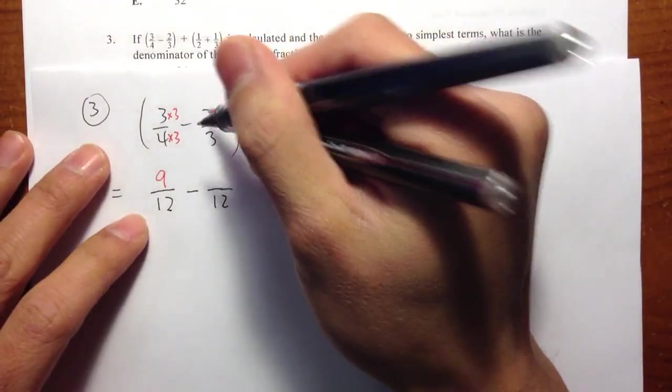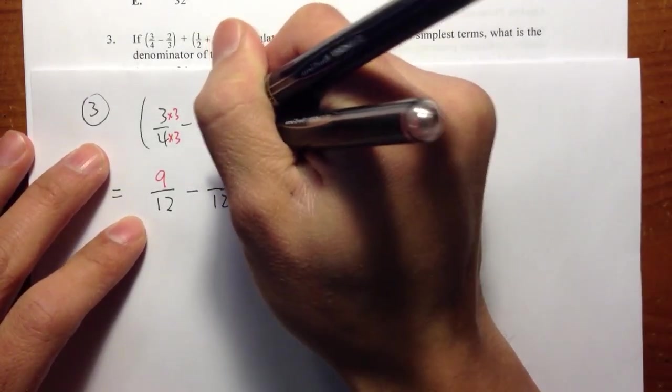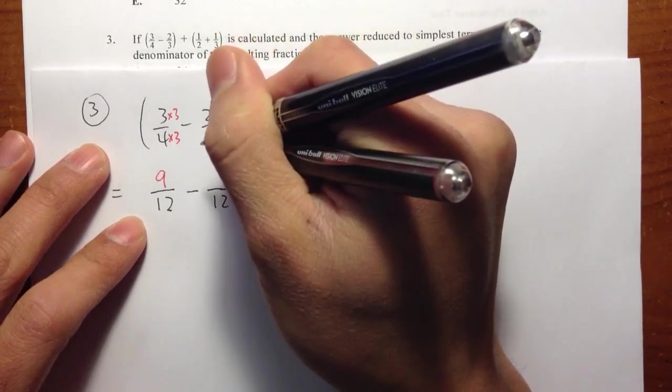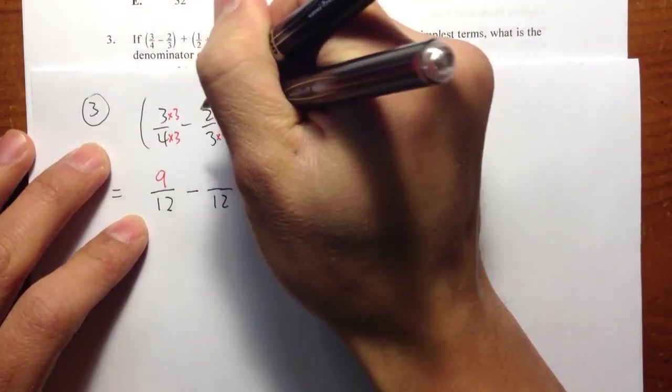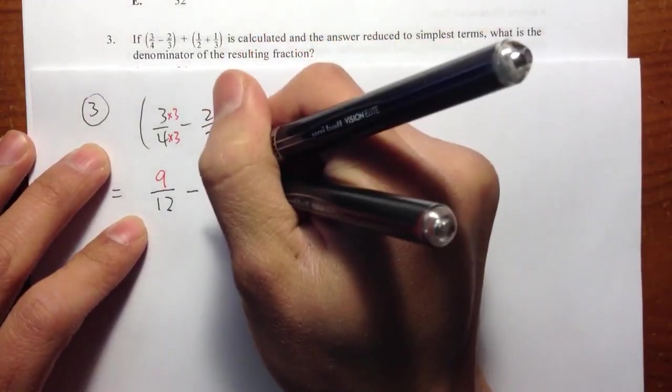For the second fraction in the parentheses, 3 times 4 is equal to 12. So I am going to multiply by 4 to the 3. Likewise, multiply by 4 on the top to the 2. 2 times 4 is equal to 8.